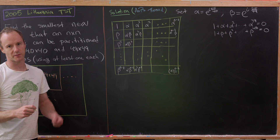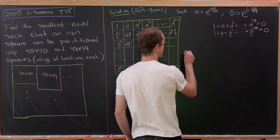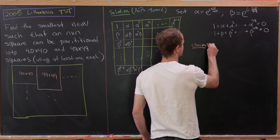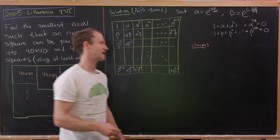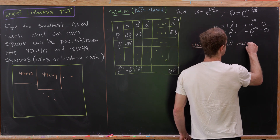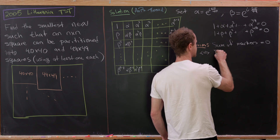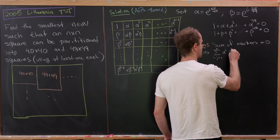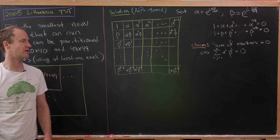Now I'm going to make the following claim: if we sum all of the markers in the squares, we get zero. That is, the sum as i and j go from zero to n minus one of alpha to the i times beta to the j equals zero.